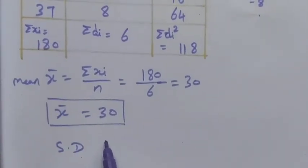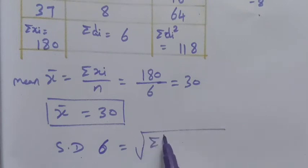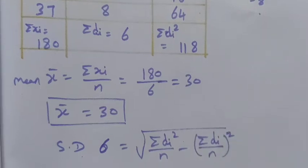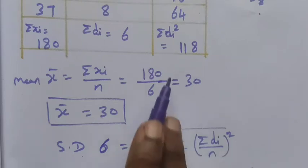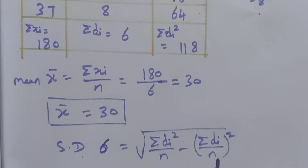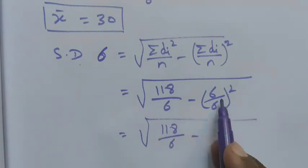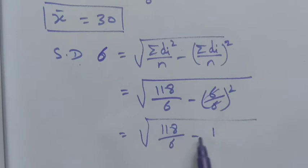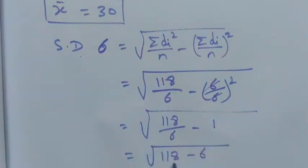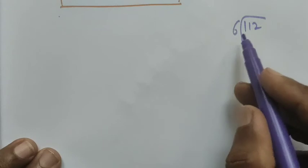The standard deviation formula is sigma equals root of (summation di squared divided by n) minus (summation di divided by n) whole squared. Substituting: root of (118/6) minus (6/6) squared. This simplifies to root of (118/6) minus 1, which equals root of (118 minus 6)/6, giving root of 112/6.